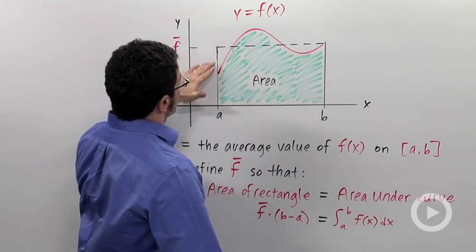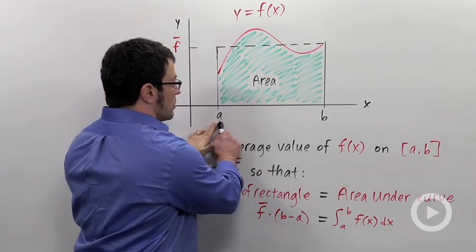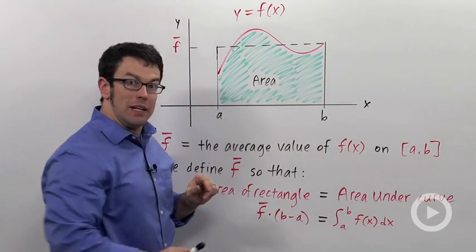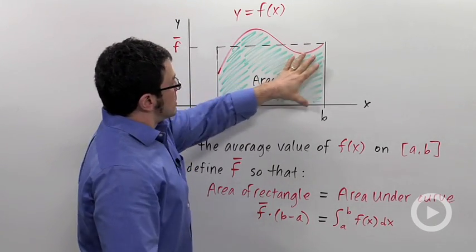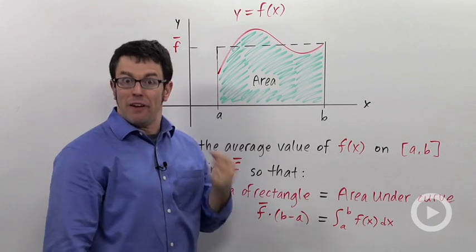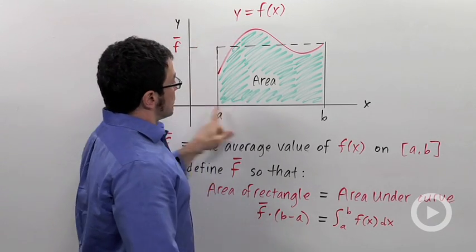Imagine this is the function that we want to average, y equals f of x. We want to average it over this interval from a to b. Think about the area under the curve. That area is going to be determined by the value of the integral of this function from a to b.